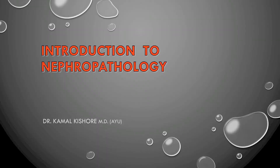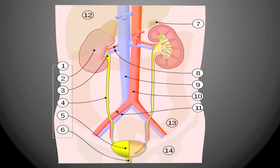Today we will study about Nephropathology. We have a pair of kidneys connected to the bladder by the ureter, and the bladder gives the output of urine via the urethra. The abdominal aorta branches into the renal artery which supplies blood to the kidney.